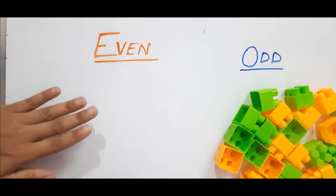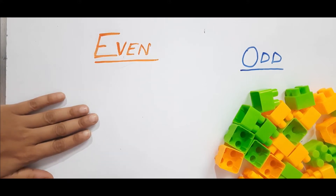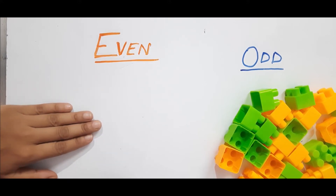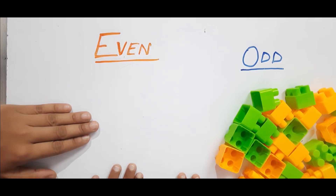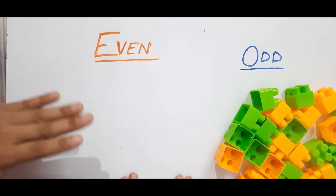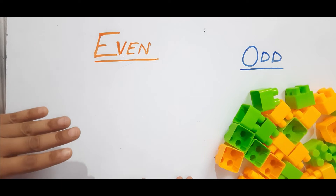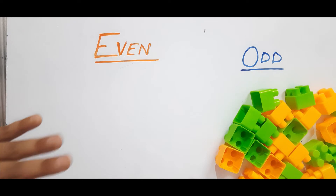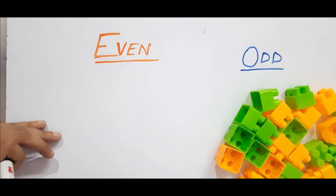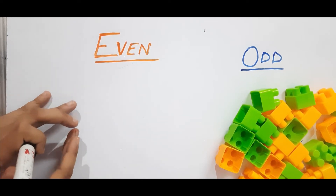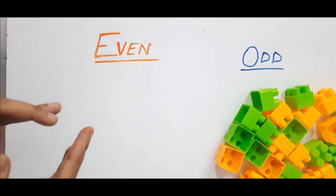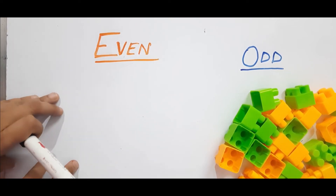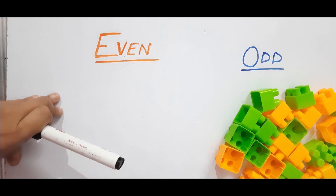So today we are going to learn about even and odd. Baby, you know what numbers are, right? Like one, two, three, four, five — yes! Okay, so there are lots of numbers like one, two, three, four, five, six, seven, eight. In those numbers there are some even numbers and some odd numbers. I'll give you one example so you can identify which is even and which is odd. Let's find it out with the blocks.